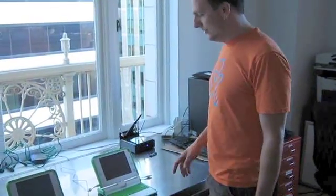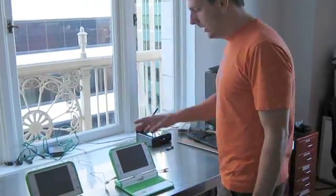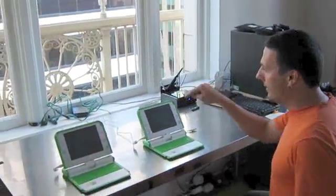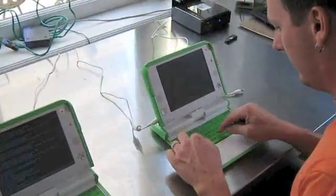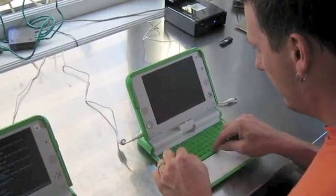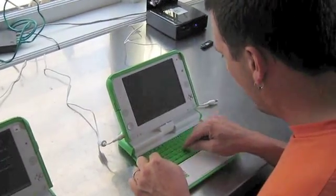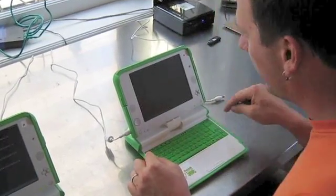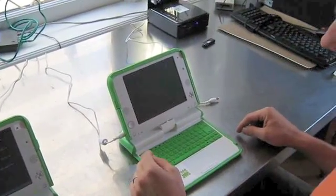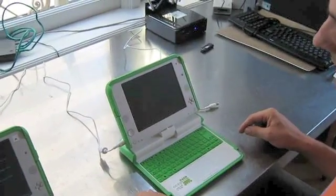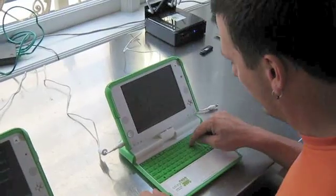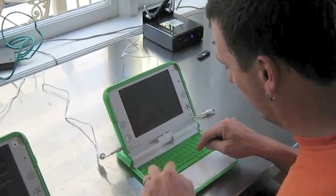So here we are back with nodes A and B. Node A is acting as the mesh router, and we're going to add node B to the mesh here, like that. Okay, and it gets its address from node A, who's acting as the router. And now let's make sure we can ping Google here.